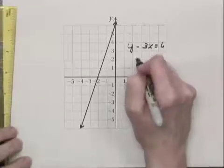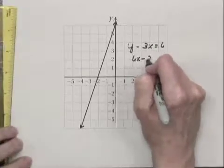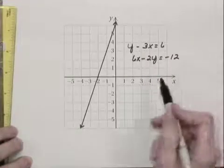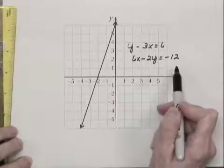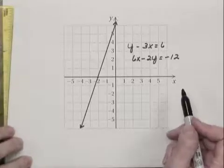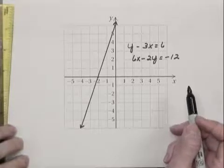And next we want to graph 6x minus 2y equals negative 12. When we find the intercepts of the second equation, we find that they're exactly the same as the intercepts of the first equation. So we see that the graphs of the two lines are the same.